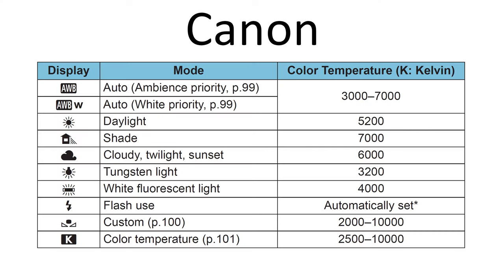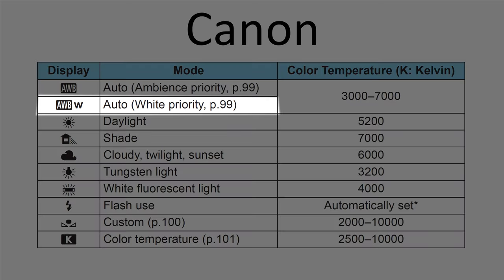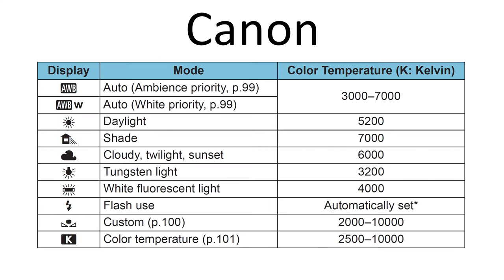Canon is a little different. Even on their R-line mirrorless cameras, they really have just two auto white balance settings: Auto Ambience Priority and Auto White Priority. White Priority is what you'd be looking for — it's closer to Nikon Z Auto 0, where orange casts are thrown out and it prioritizes cooler, whiter colors. For real estate photography, nine times out of ten — probably 99 out of 100 — you're going to want to get rid of that orange cast. So use Auto White Priority across the board for the Canon R series.